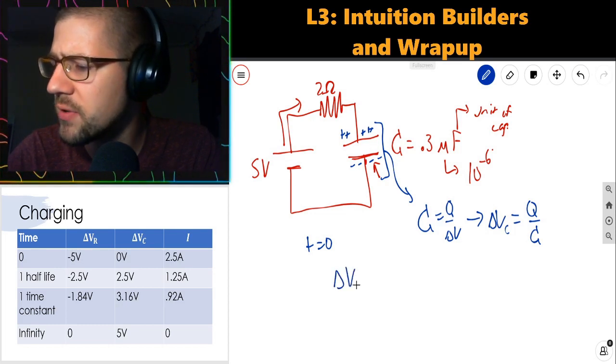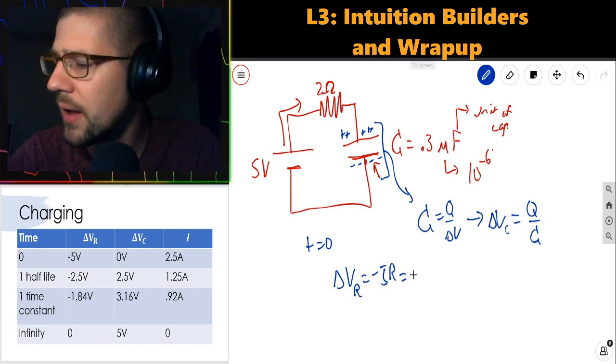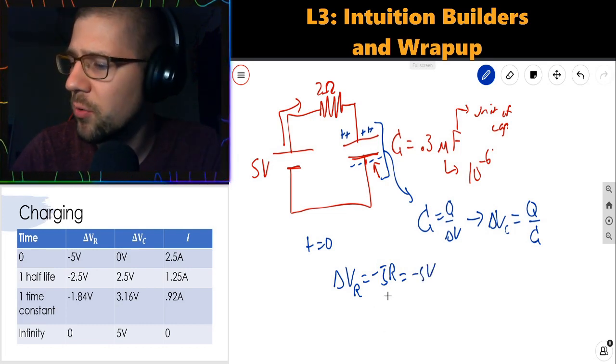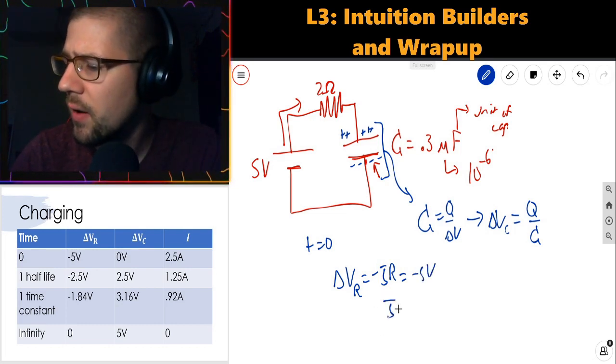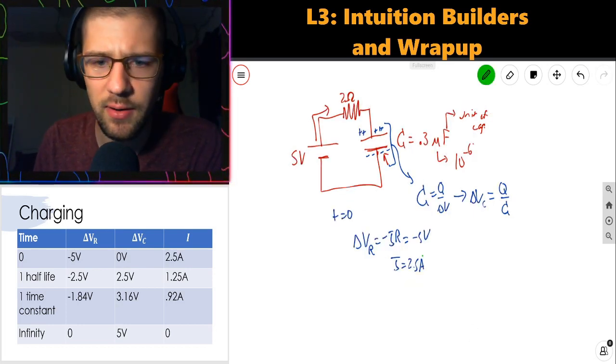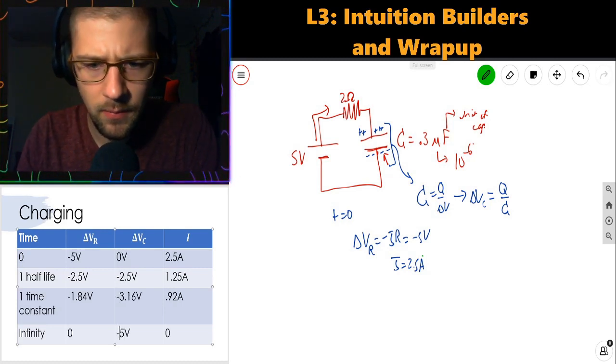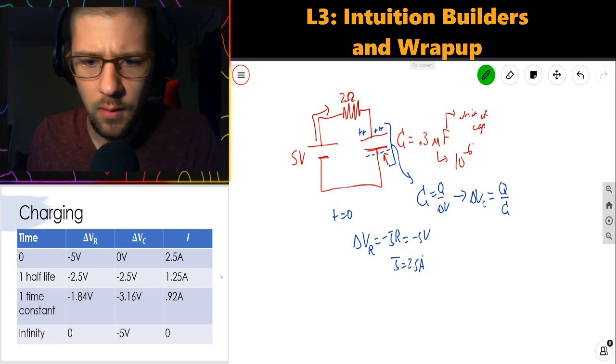That means that the change in voltage across the resistor, which is negative IR, is negative 5 volts, which yields for me a current of 2.5 amps. And I've just realized I've made a little error in my chart. Let me fix that real quick. These should be negative.